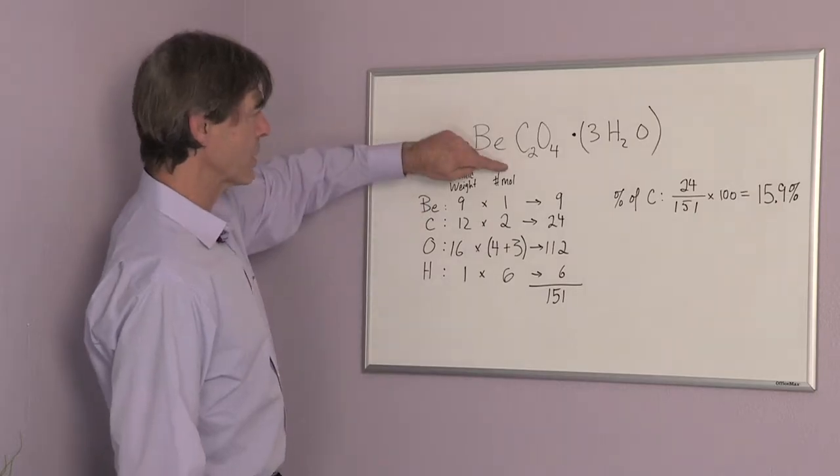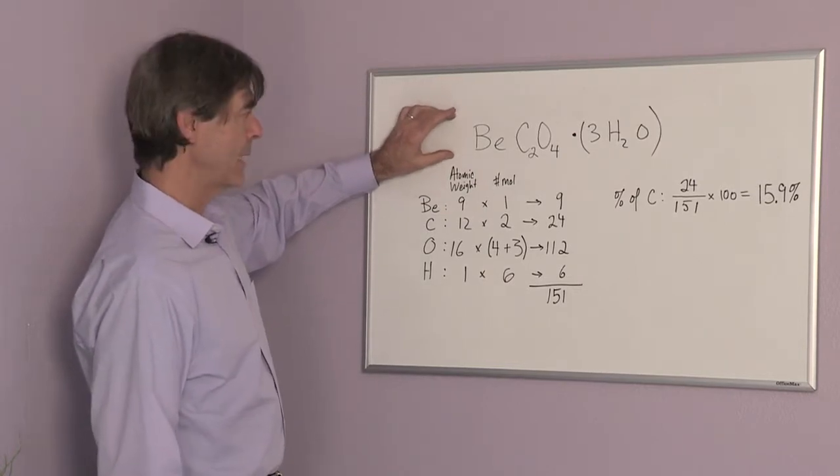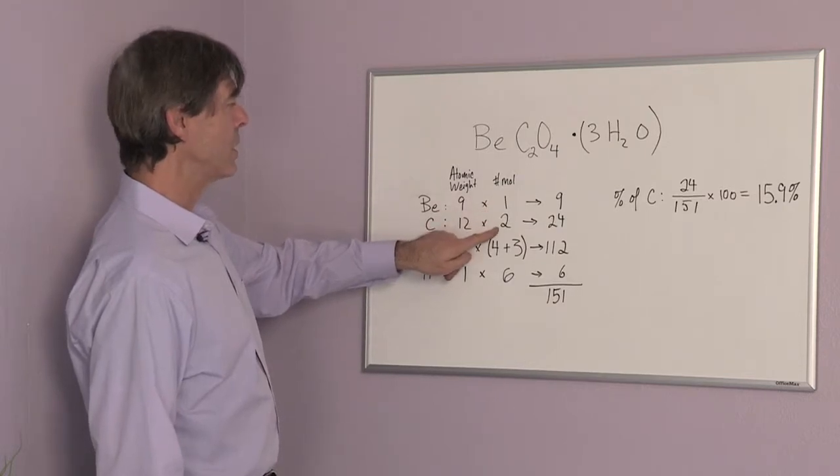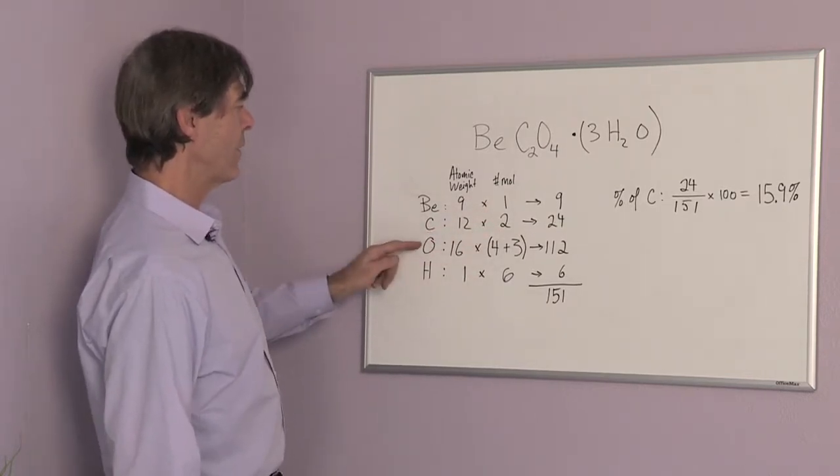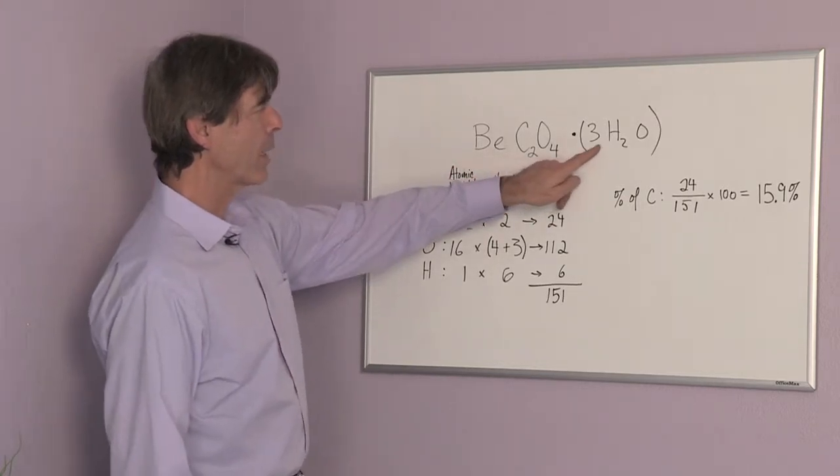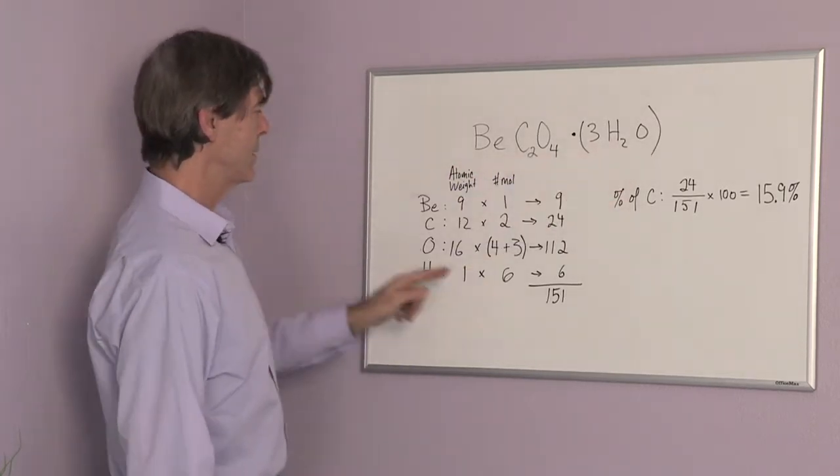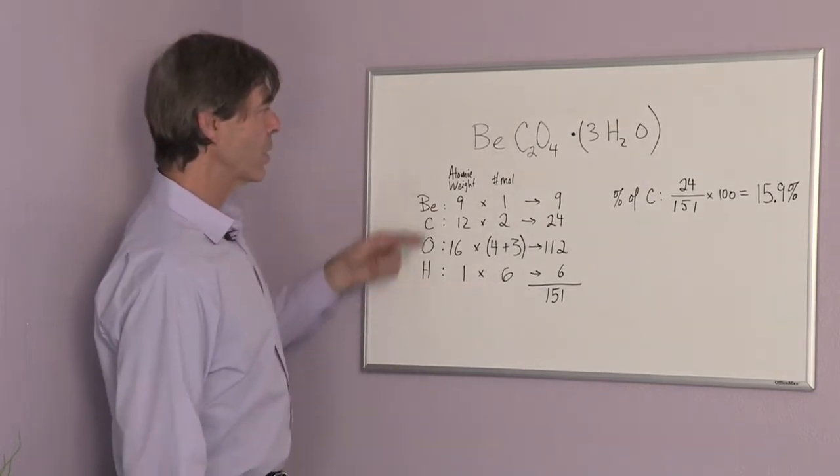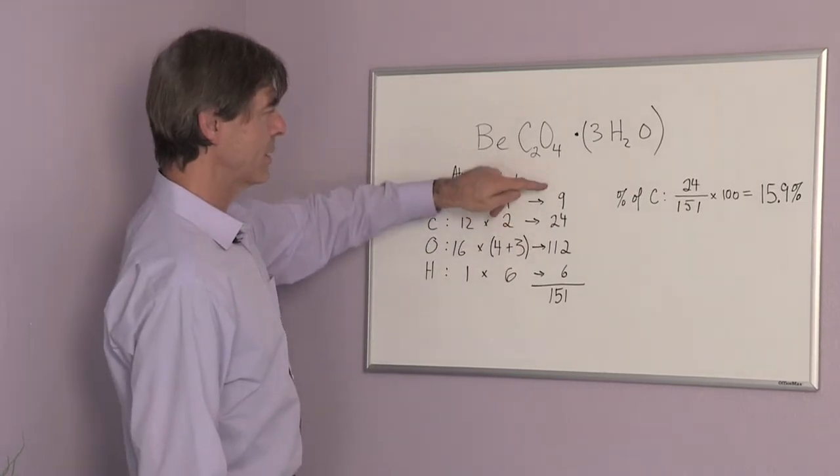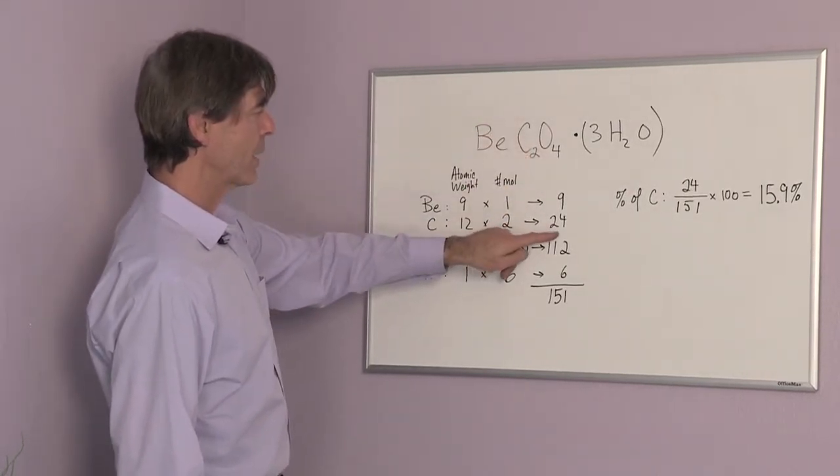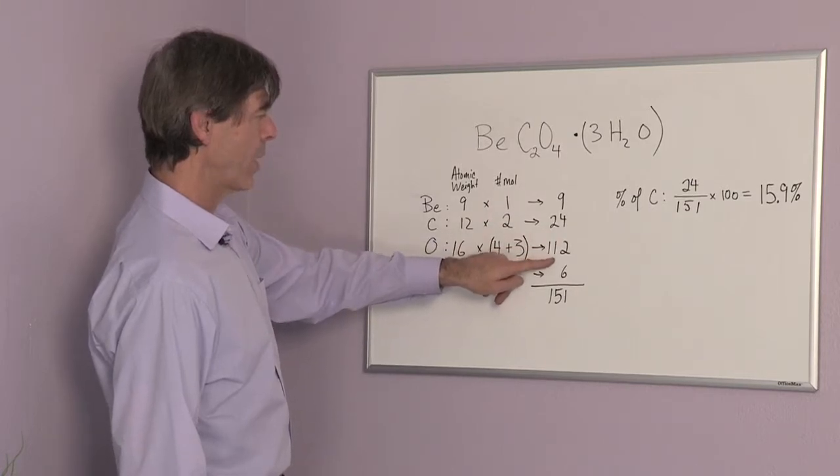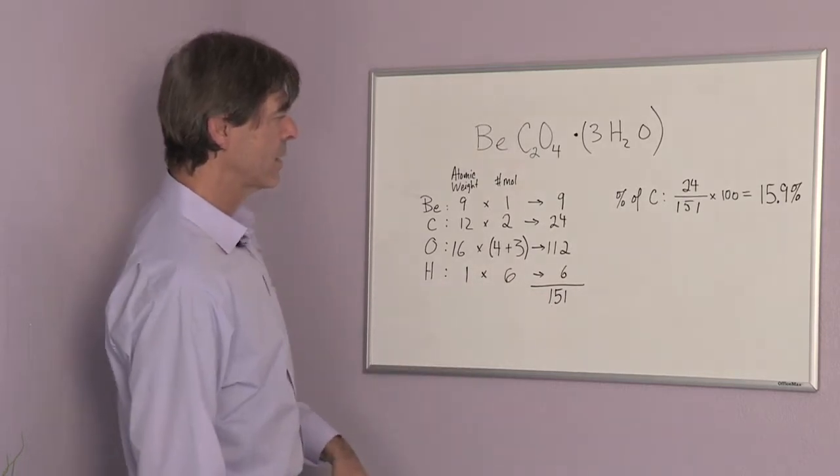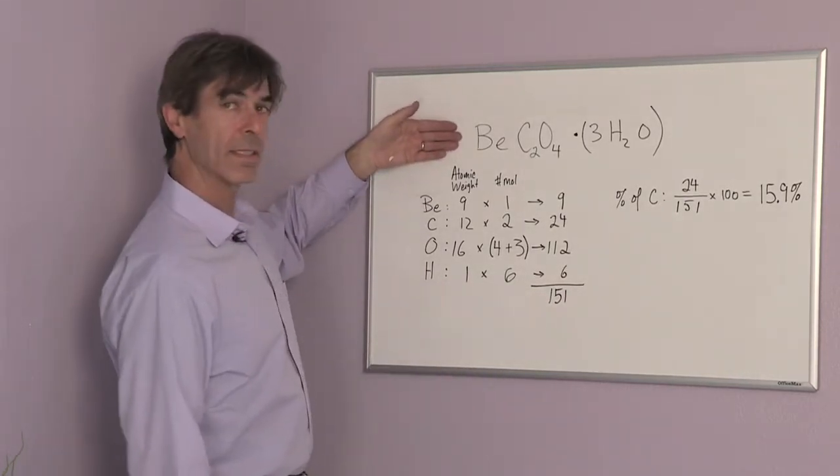Now, the number of moles in one mole of this substance: we have one beryllium atom, we have two carbon atoms so we have two moles, we have oxygen, we have four plus three oxygen atoms, and we have six hydrogen atoms. So the total atomic weight of these ingredients are nine plus 24 plus 112 plus six. That gives me 151 is the gram weight of this substance.